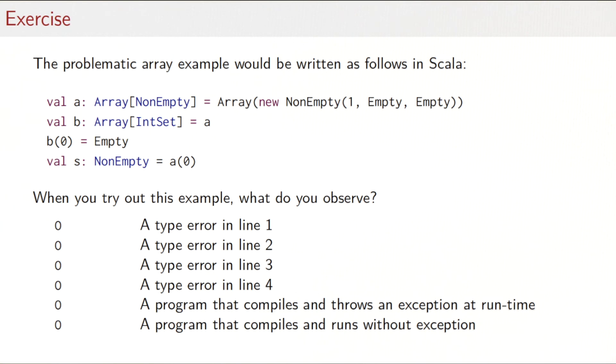So the correct answer is you would expect to see a type error in line two. Why? Well, because the A value was an array of NonEmpty. Whereas B was an array of IntSet. But in Scala, arrays are not covariant. So you would not have a subtype relationship between those two arrays. And that means you will get a type error. It will say, I found an array of NonEmpty, but I've expected an array of IntSet.